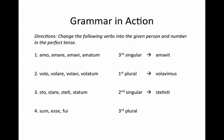And same thing with number four: sum, essay, phooey. Though this is our irregular verb 'to be,' in the perfect tense it's going to follow the same rules and actually be regular. So we go to the third principal part, phooey, drop the 'i,' and it gives us our stem, fu. We add our third person plural ending, erunt, to make fuerunt — 'they have been.'